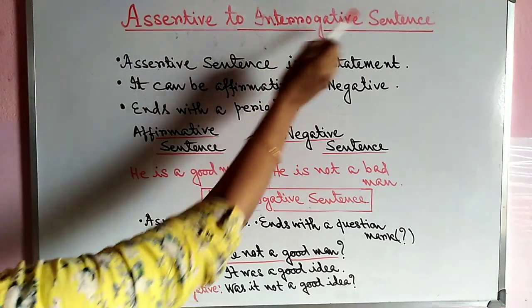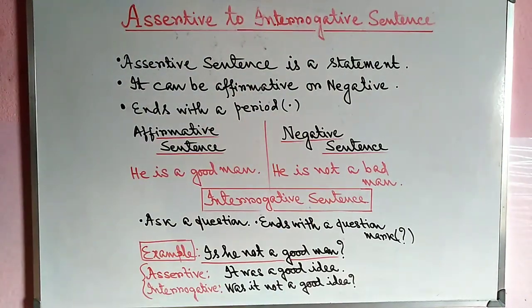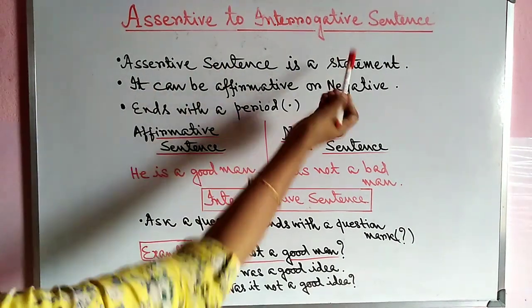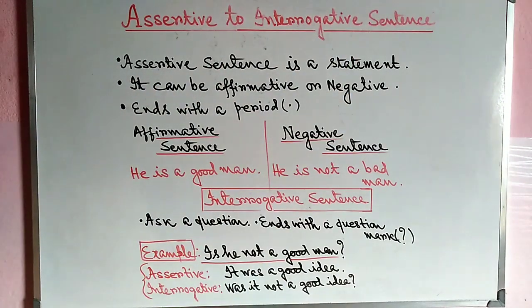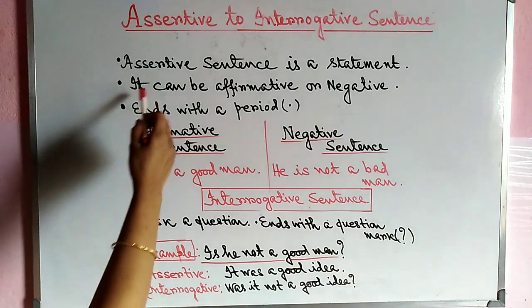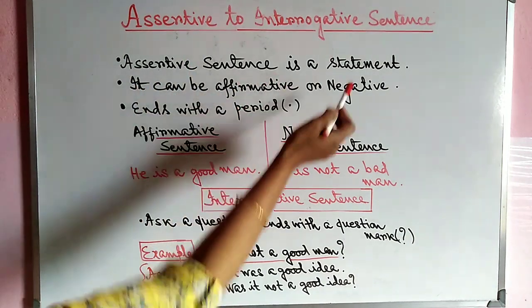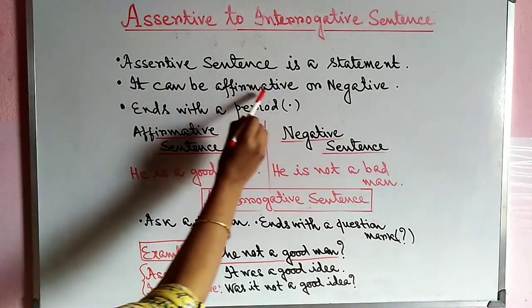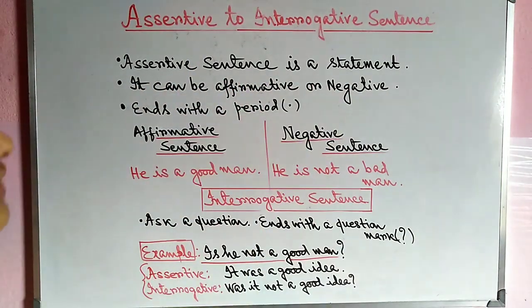Assertive to interrogative sentence. First of all, we have to know what is an assertive sentence. An assertive sentence is a statement — it tells information. It can be affirmative or negative in meaning.